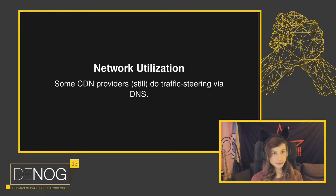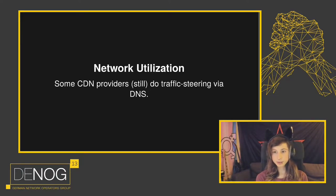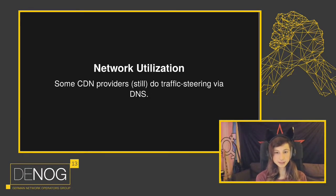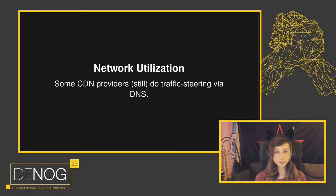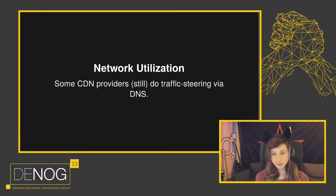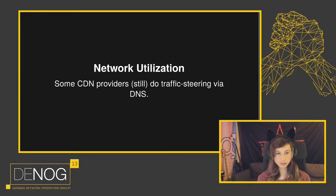Then there is network utilization. Some CDN providers still do their traffic steering via DNS. That works by having the CDN providers ping-probe your DNS resolvers and try to figure out which of their PoPs is nearest in terms of latency, then give your DNS resolver the answer to access the nearest PoP. If you ask 8.8.8.8 for a query, you'll get an answer that may be optimal for Google's network but not for yours. Even if you run your own DNS resolvers, you want to do it distributed — if your resolvers are in Frankfurt and your user is in Berlin, the CDN will point your user to their Frankfurt PoP, costing you money to carry all the traffic up to Berlin.